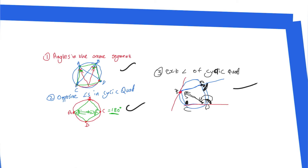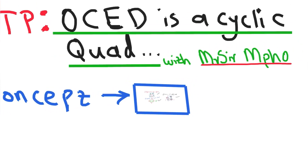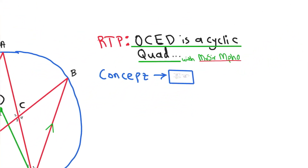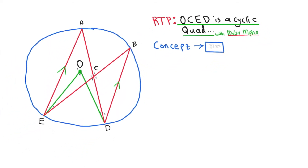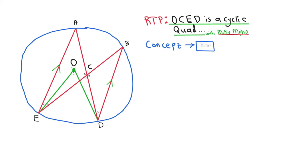So now we go back to the problem. I'll check the diagram and determine which property is easiest to prove. Looking at the diagram, they want us to prove that OCED is a cyclic quad. O is here, C is here, D is here, and E is here.